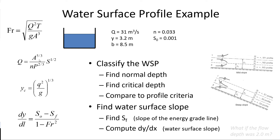When you know the critical depth, the normal depth, and your given flow depth, that's how you can determine whether you've got an M1, M2, M3, or S1, S2, S3 profile. And when you know which it is, you'll be able to know whether it's getting deeper or shallower in the direction of flow. I'm going to pause here for a moment while you calculate the critical depth, the normal depth, and determine the water surface profile type.